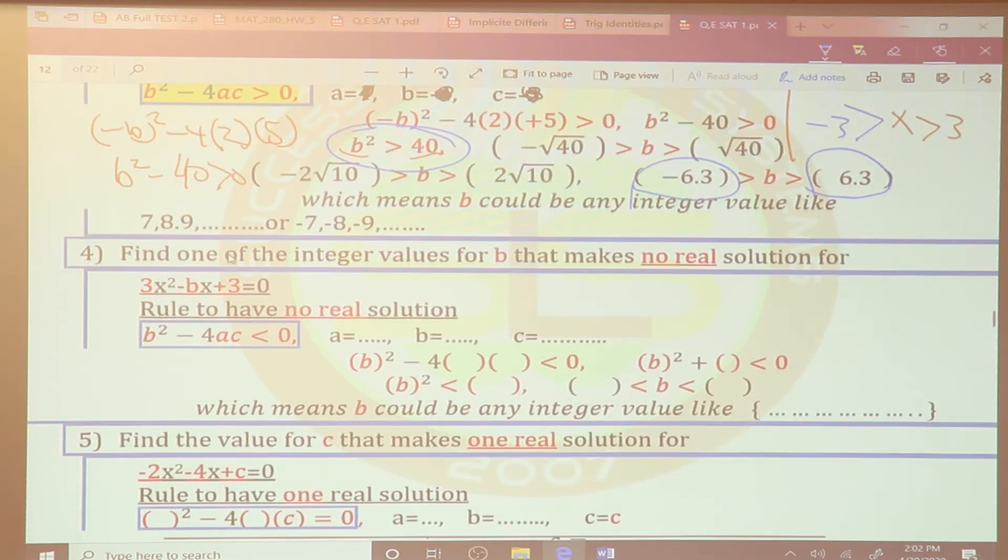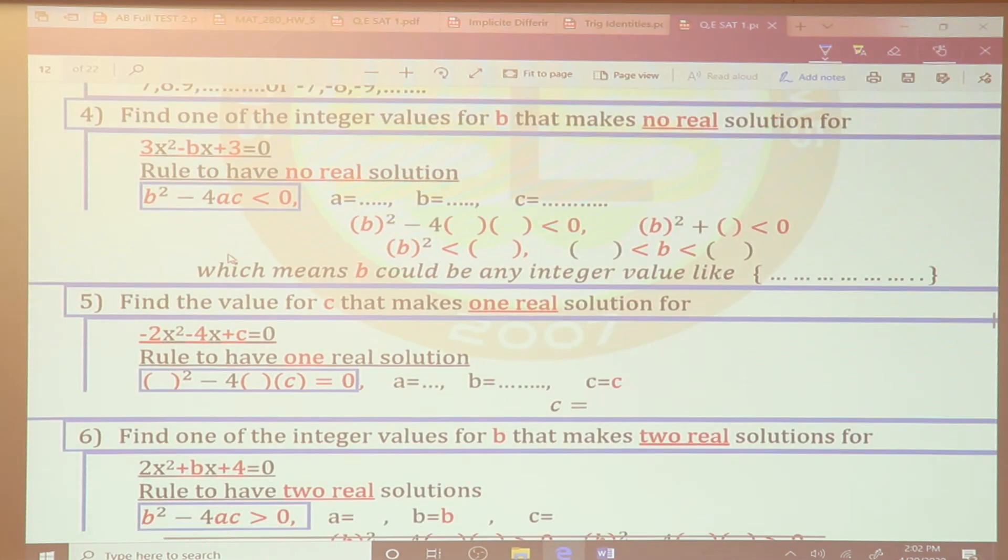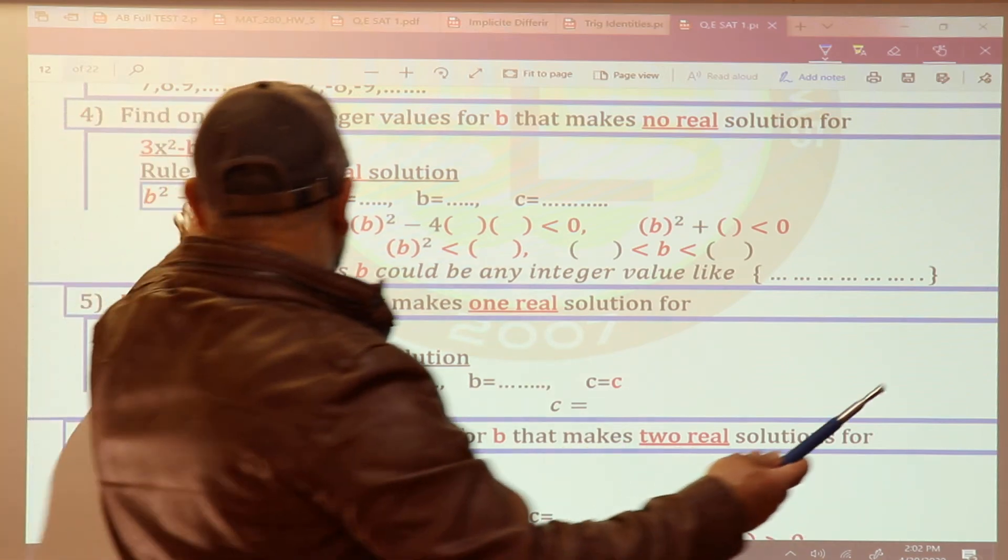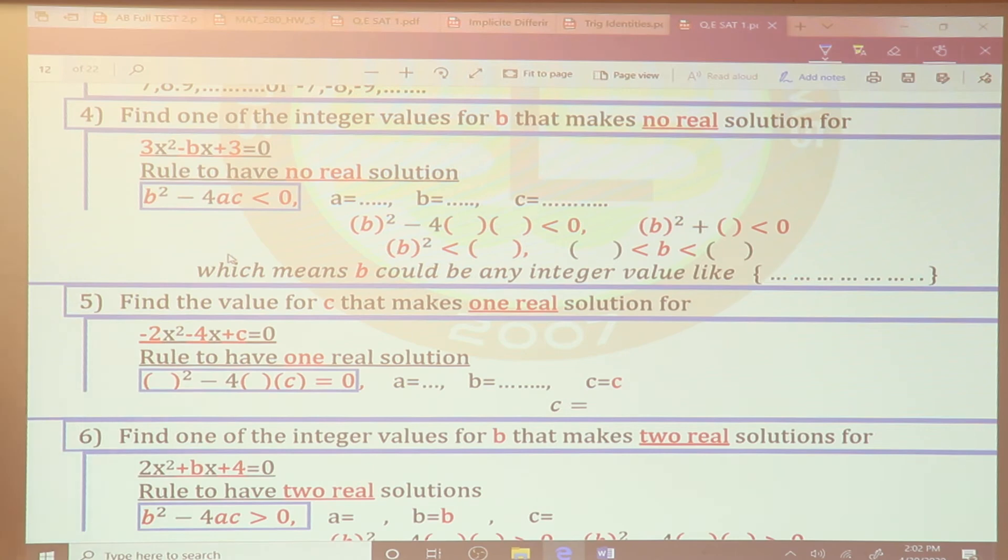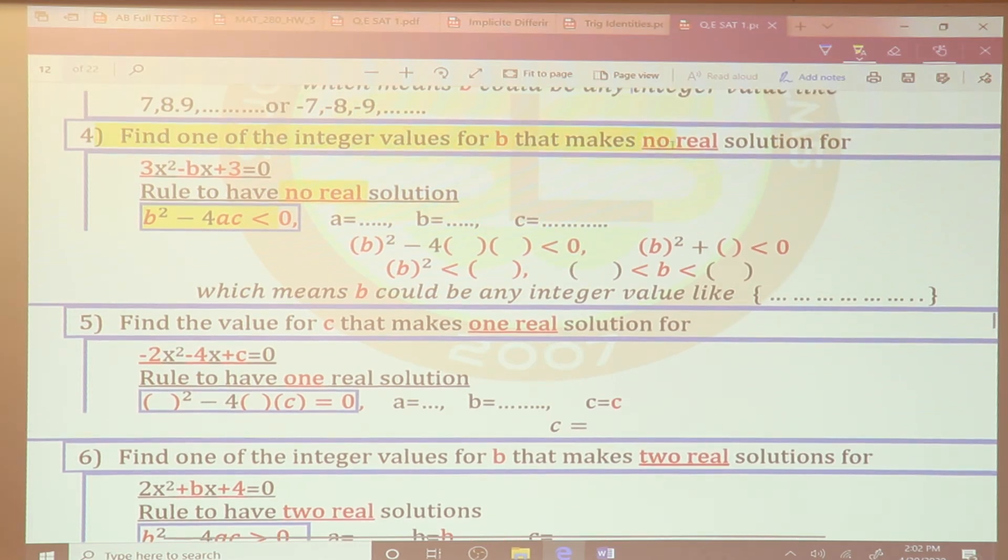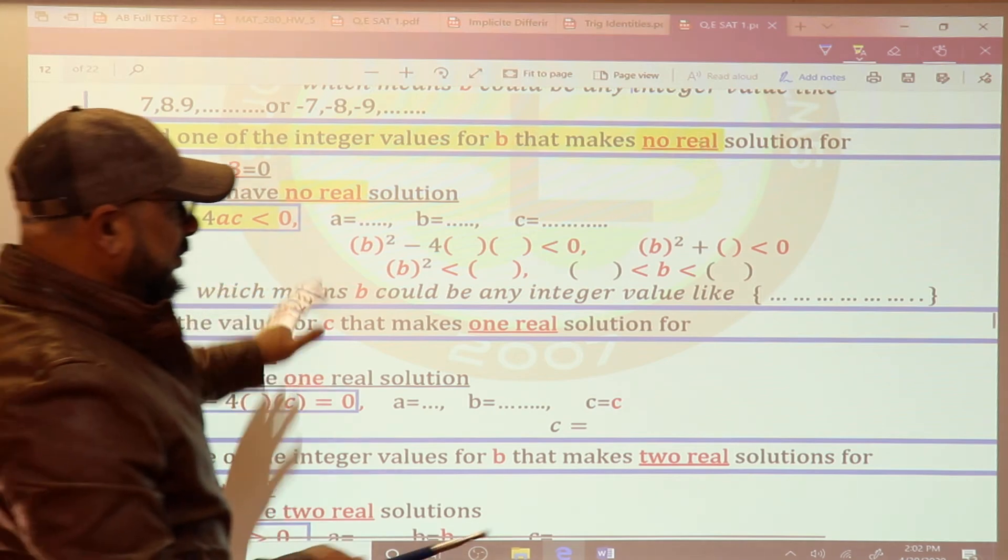Now let us finish this. Now your turn, different color, blue. We have no real solution, right? What we have: no real solution. What I have to use? B squared minus 4AC is less than 0. Why? Because there's no real solution. Now I have a few spaces here. Fill these spaces. What do you have?